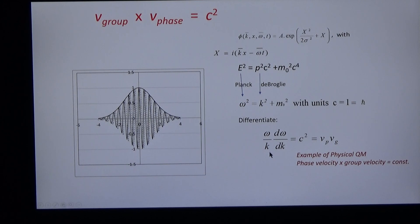And the best thing you can do to this is differentiate it because then you find that the product of the phase velocity with a group velocity is equal to c squared, a new result in quantum physics.